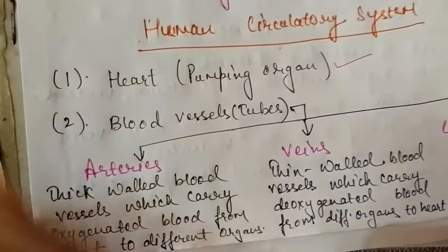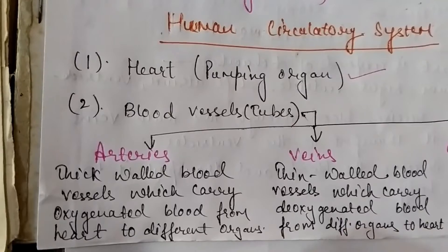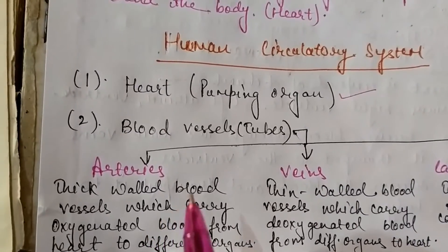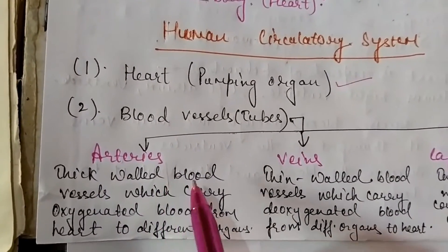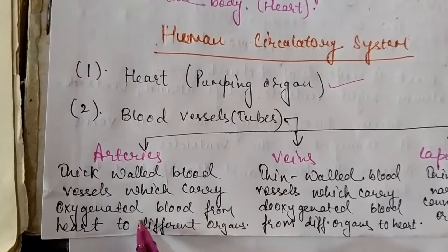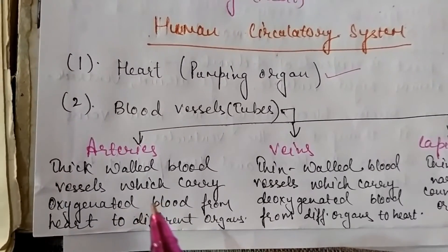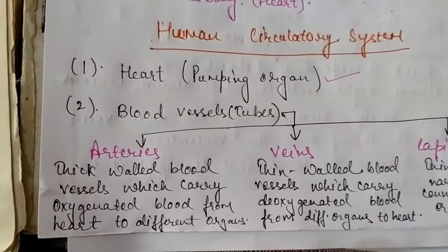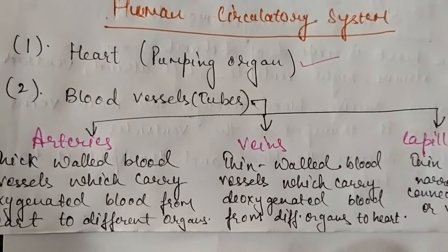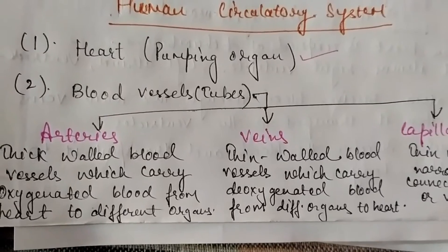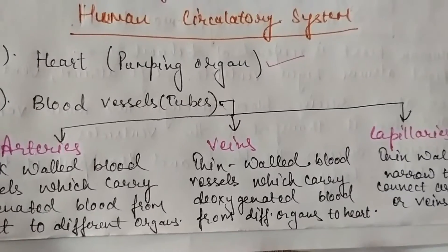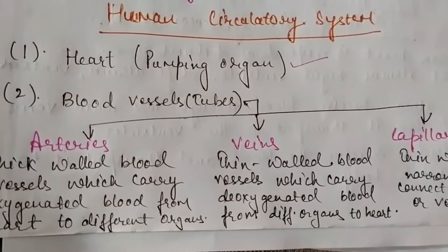There are three types of blood vessels: arteries, veins, and capillaries. Arteries are thick-walled blood vessels that take oxygenated blood — that is, pure or oxygen-rich blood — from the heart to different organs. Veins are thin-walled blood vessels that take deoxygenated blood from different organs back to the heart, as carbon dioxide is present in it.